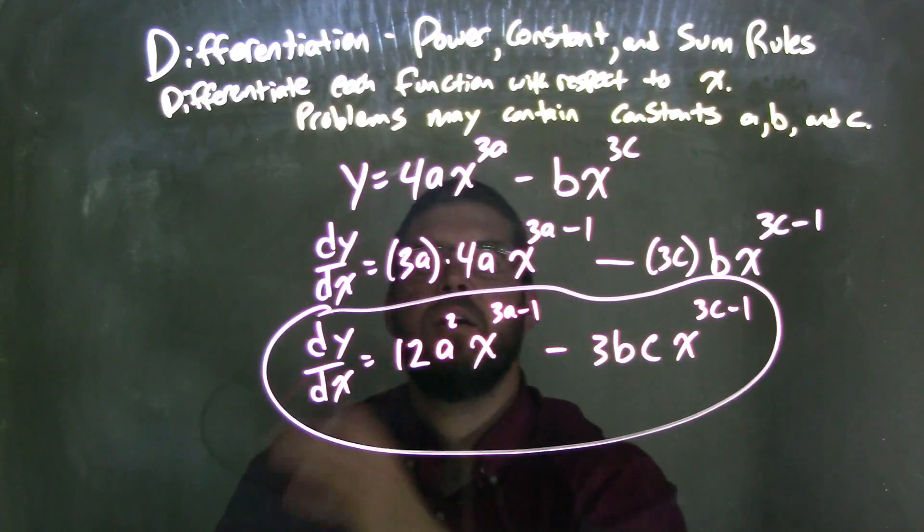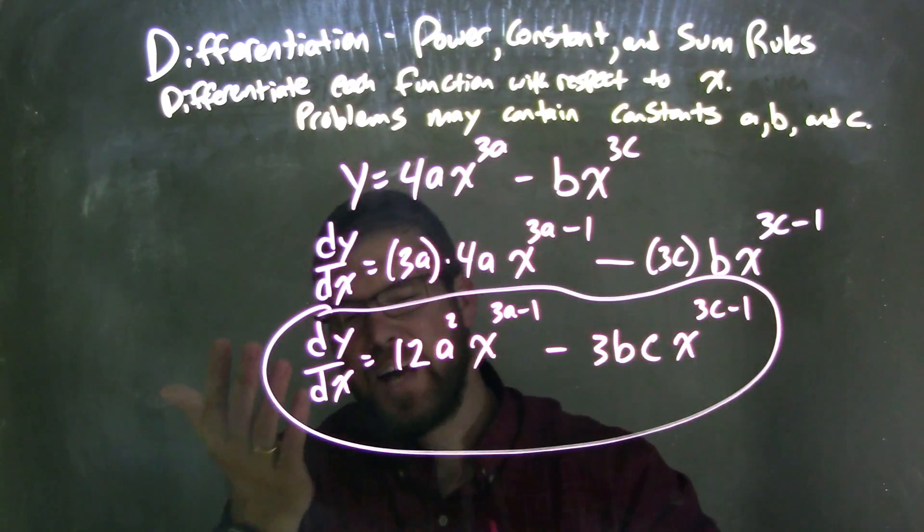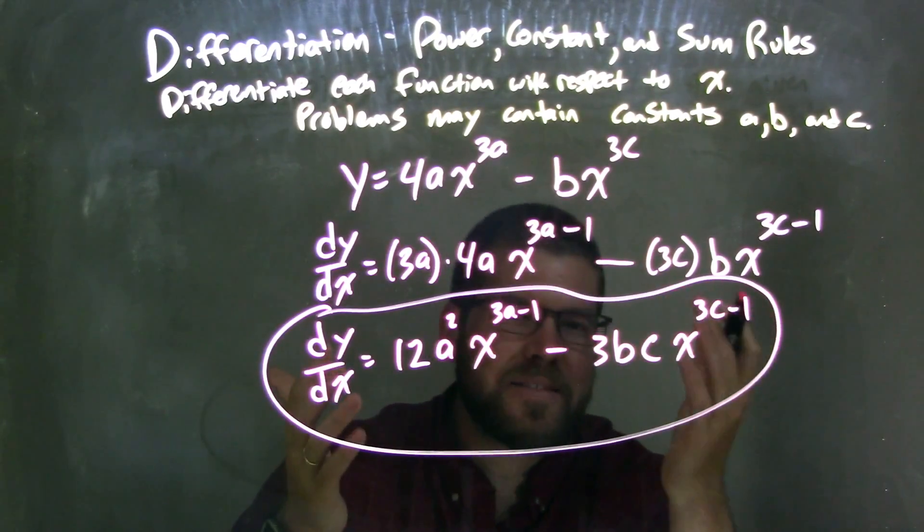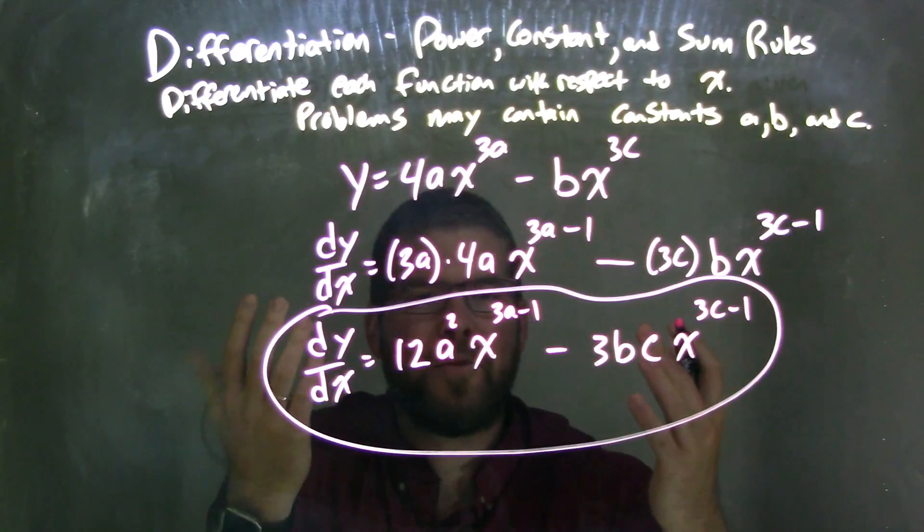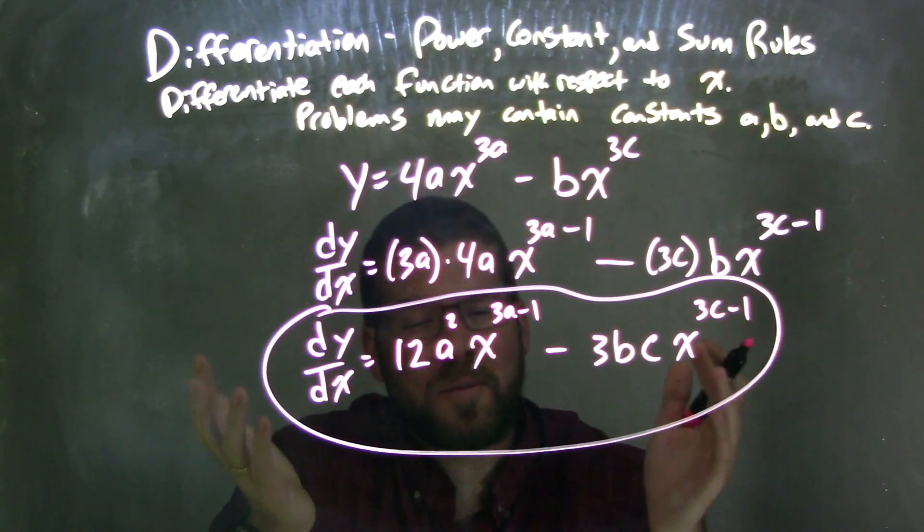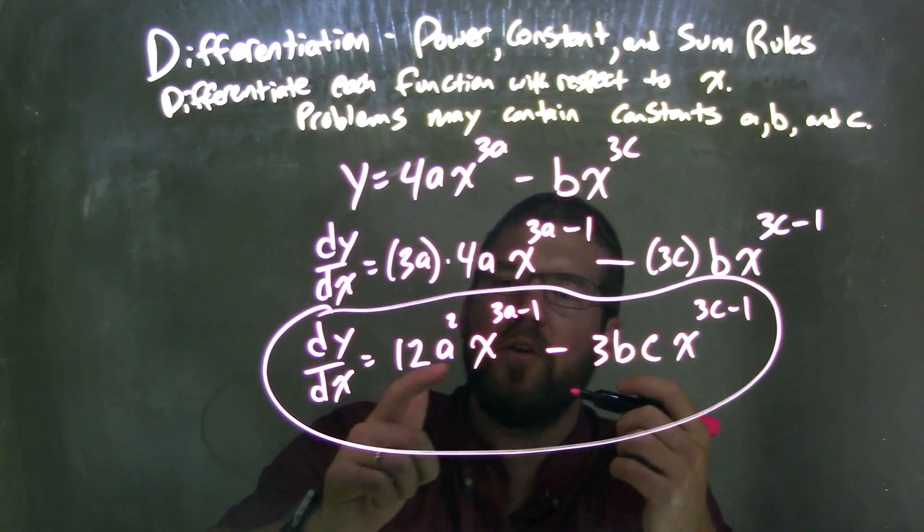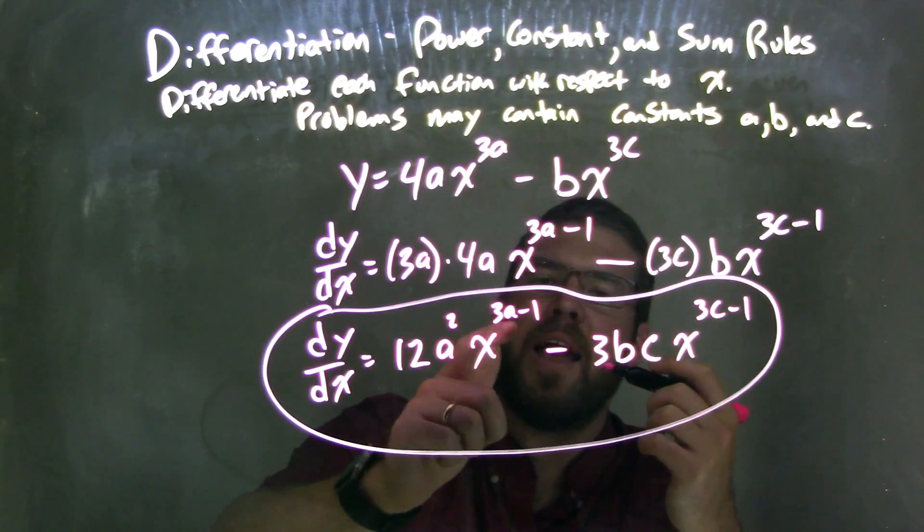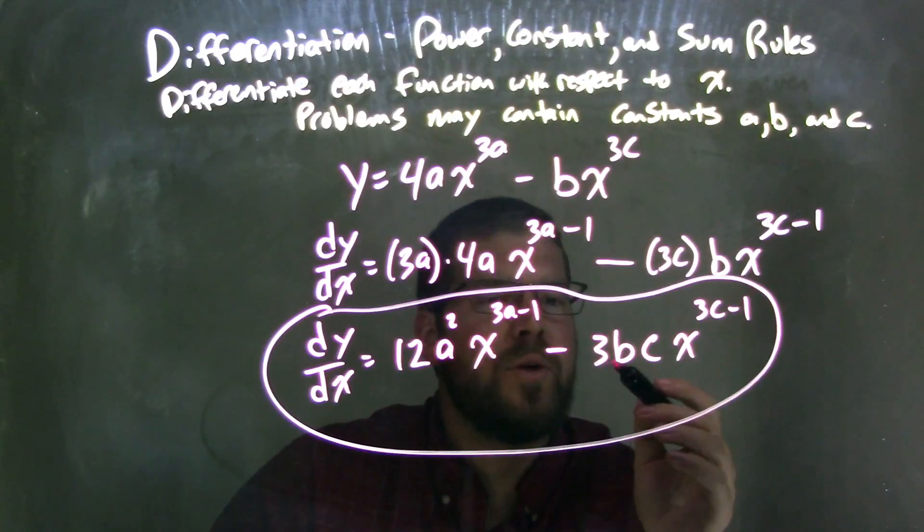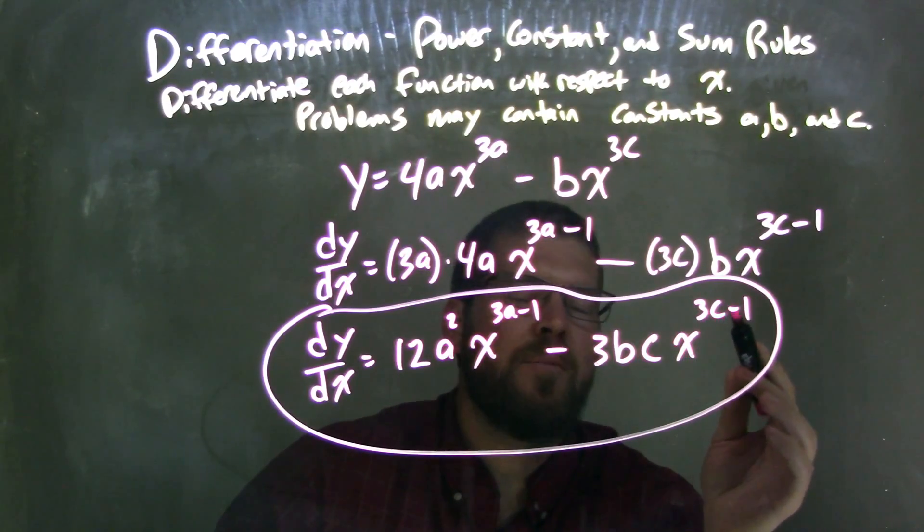So it's kind of confusing, but kind of simple once you understand it. There's not much simplification that you can do sometimes, but our final answer here is dy dx is equal to 12a squared x to the 3a minus 1 power minus 3bc x to the 3c minus 1 power.